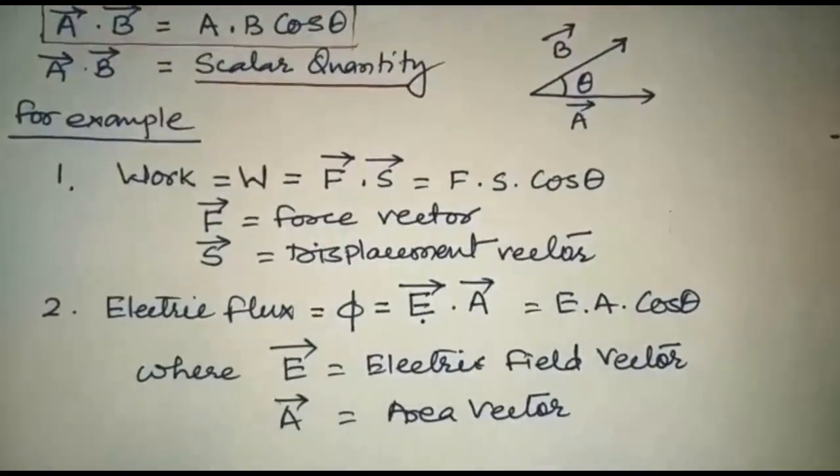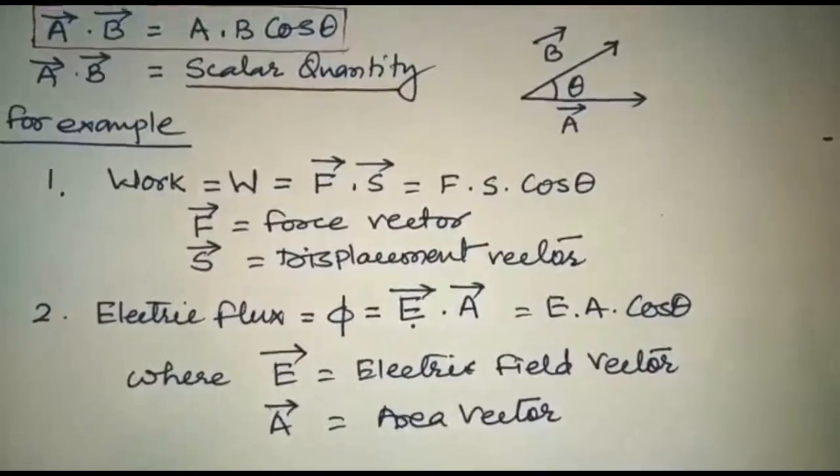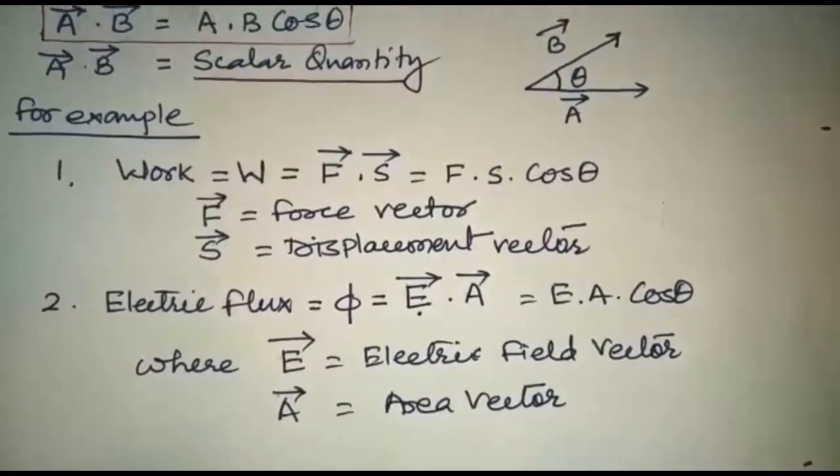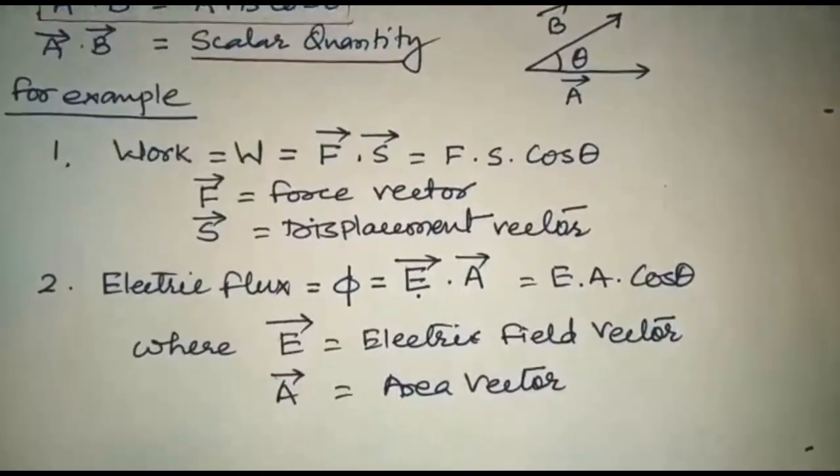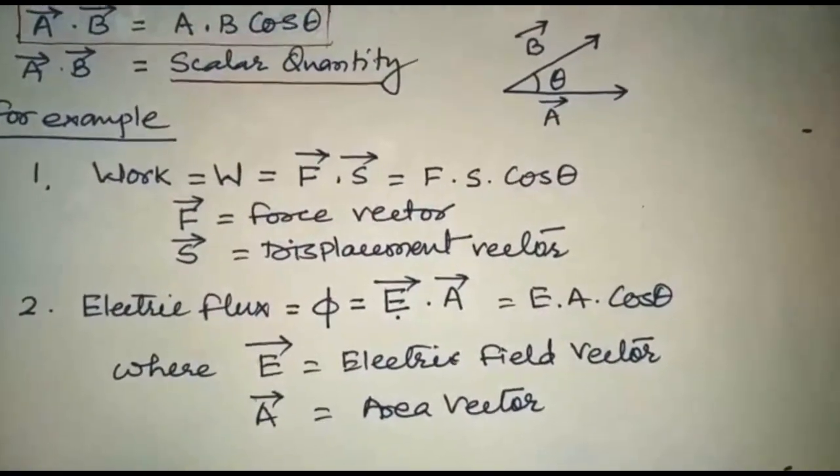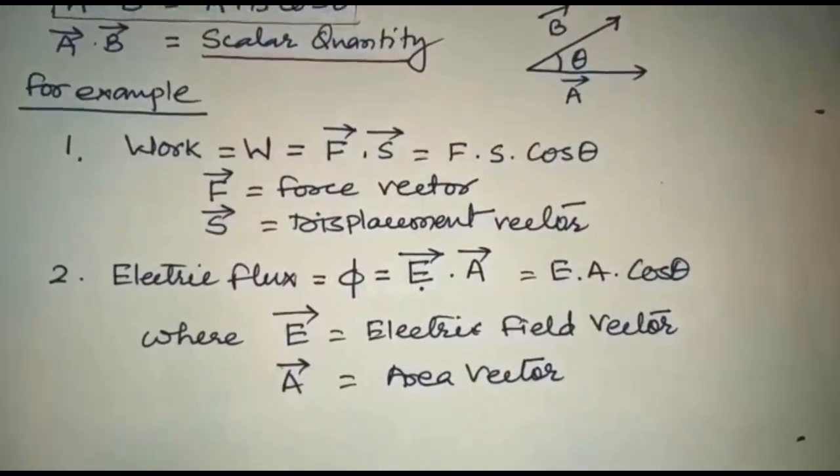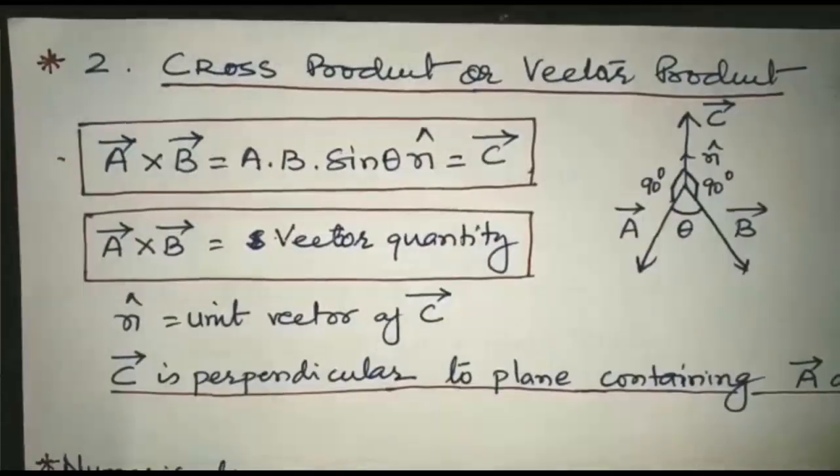Now I am giving another example of dot product. Electric flux, which is represented by phi, equals the dot product of two vectors: electric field vector and area vector. You are going to study electric flux in chapter number 1 of class 12.